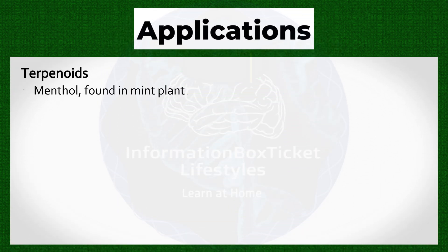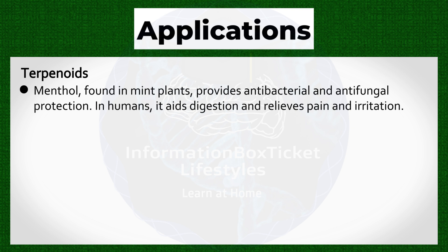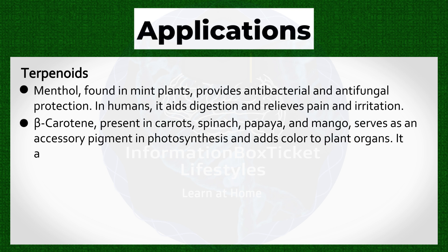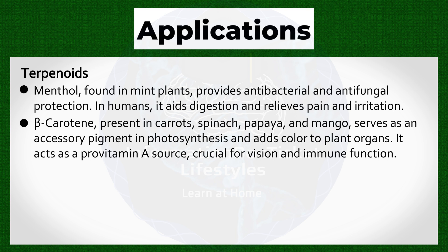Applications of Phytochemicals — Terpenoids: Menthol, found in mint plants, provides antibacterial and antifungal protection. In humans, it aids digestion and relieves pain and irritation. Beta-carotene, present in carrots, spinach, papaya, and mango, serves as an accessory pigment in photosynthesis and adds color to plant organs. It acts as a provitamin A source, crucial for vision and immune function.